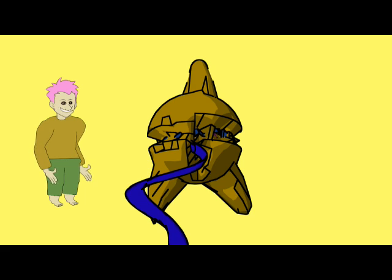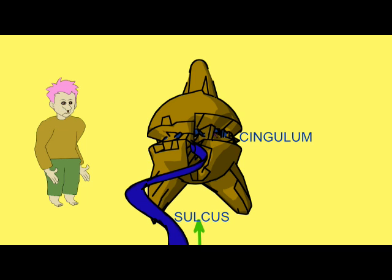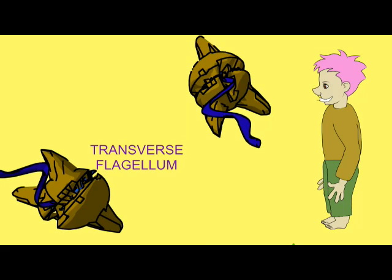There is a groove around the equator of the dinoflagellate known as the cingulum, and a shorter longitudinal groove known as the sulcus. There are two flagella in a dinoflagellate.